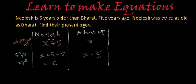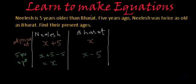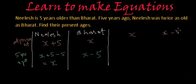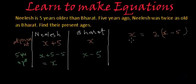So five years ago, Nilesh's age was X years and Bharat's age was X minus 5. The next part of the statement says Nilesh was twice as old as Bharat. Five years ago, Nilesh's age was X and Bharat's age was X minus 5. The relation was Nilesh was twice as old as Bharat, meaning Nilesh's age was two times Bharat's age.